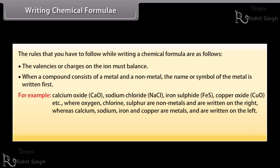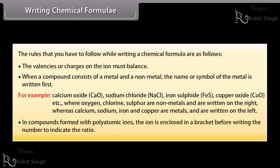Where oxygen, chlorine, and sulfur are non-metals and are written on the right, whereas calcium, sodium, iron, and copper are metals and are written on the left. In compounds formed with polyatomic ions, the ion is enclosed in a bracket before writing the number to indicate the ratio.